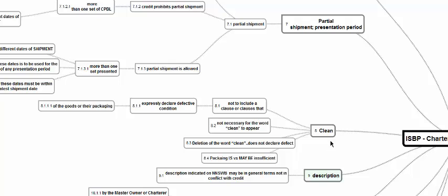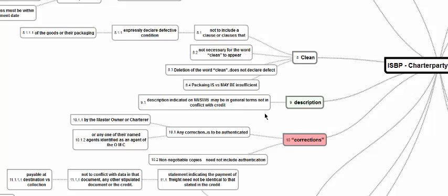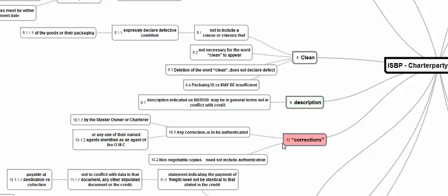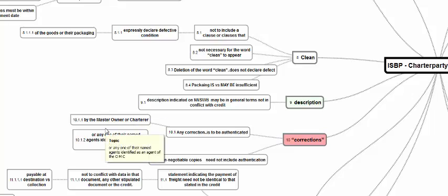Clean: the word 'clean' need not appear in the transport document. A clean transport document means there should be no express declaration of a defective condition of the goods or packaging. The absence of the word 'clean' does not make the document discrepant. Description of goods can be in general terms — it need not be a mirror image but should not conflict with the description in the credit. Corrections should be authenticated by the master, owner, or charterer. If an agent is authenticating, the agent should state for and on behalf of whom — whether master, owner, or charterer — and the capacity and name should be identified.